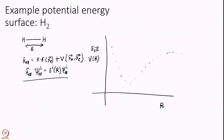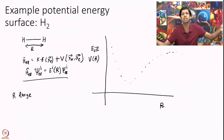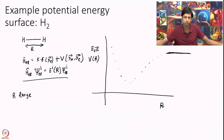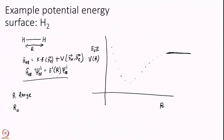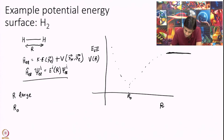Let us qualitatively discuss how this plot looks. When R is large, the two hydrogens are very far separated from each other, so it does not matter if I change R a little - the potential energy will be almost constant. When R approaches infinity, the two hydrogens do not know each other at all. At some distance R_0, the H2 molecule forms a good, stable bond - depicted by a minimum on this energy surface.